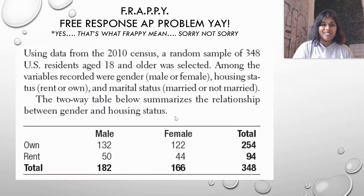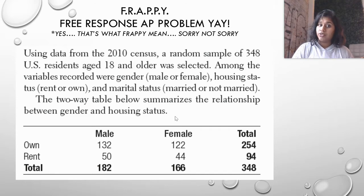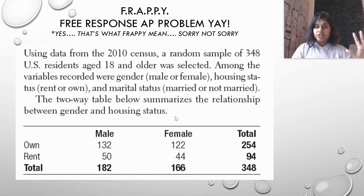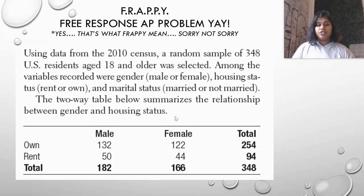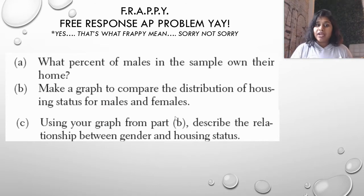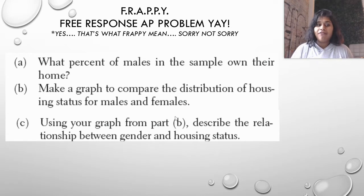Using data from the 2010 census, a random sample of 348 US residents age 18 and older were selected. Variables recorded included gender (male or female), housing status (rent or own), and marital status (married or not married). The two-way table summarizes the relationship between gender and housing status. Questions A, B, and C deal with that table: what percent of males in the sample own their home, make a graph to compare the distribution of housing status, and describe the relationship in words.